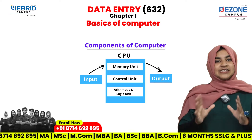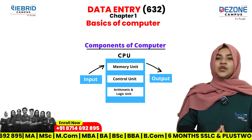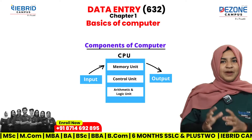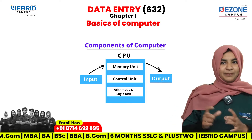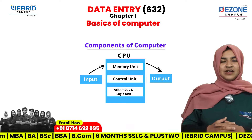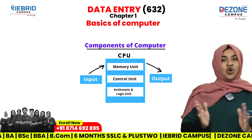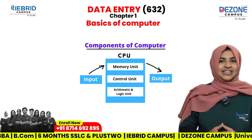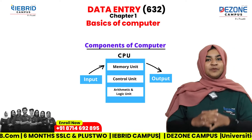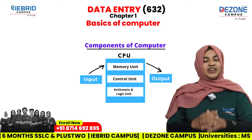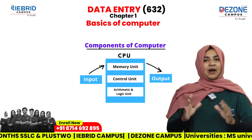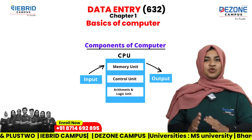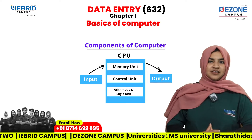The next unit is the memory unit. What is the memory unit? We can relate it to mobile phones — we use a memory card for storage. We store files, photos, and videos. The memory unit stores data, tasks, files, and folders — all the information we save in our computer.